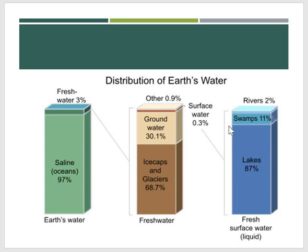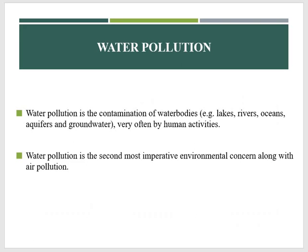Looking at it another way, only 1% of water on the Earth's surface is usable by humans, and the other 99% of the total fresh water is situated underground. Now moving on to water pollution.